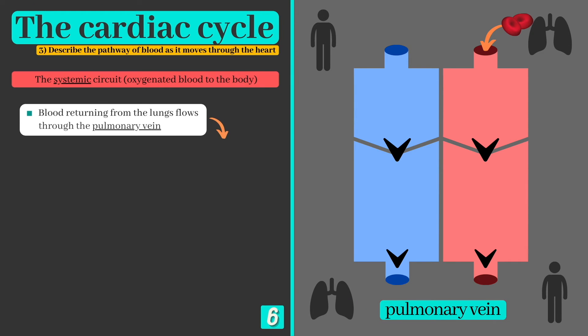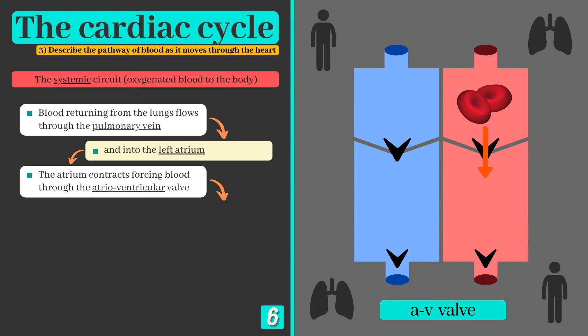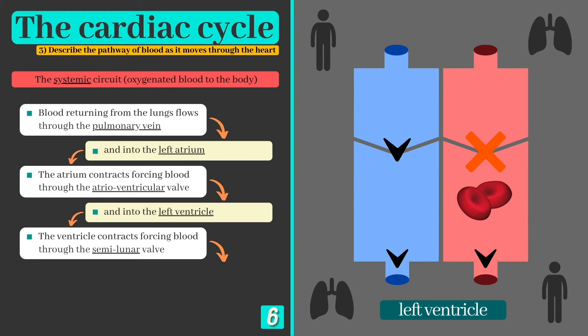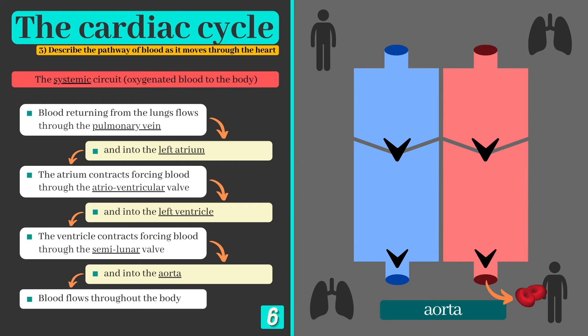The now oxygenated blood returns back to the heart via the pulmonary vein, where it enters the left atrium — remember, veins direct blood back to the heart. Just as before, the atrium contracts forcing blood down through the atrioventricular valve and into the left ventricle. The ventricle then contracts, causing the atrioventricular valve to close and the semilunar valve to open. Blood then flows through the semilunar valve and into the aorta, which transports blood throughout the body enabling oxygen and nutrients to be delivered wherever they are needed. The cardiac cycle is now complete.